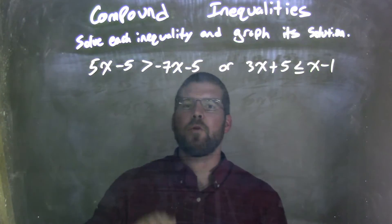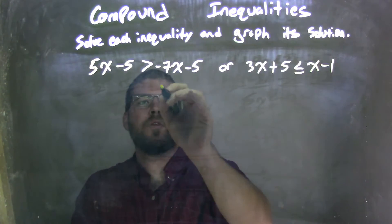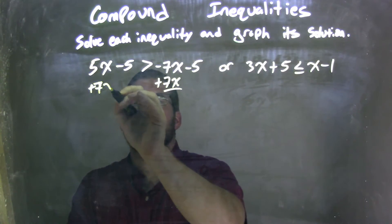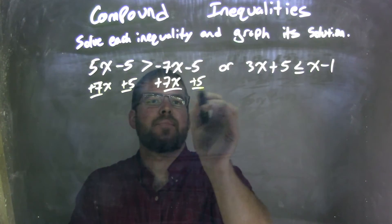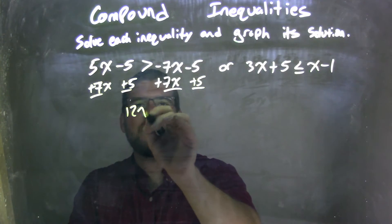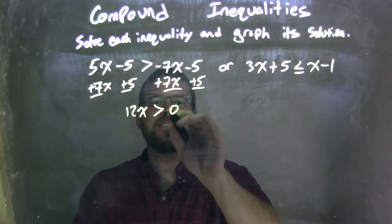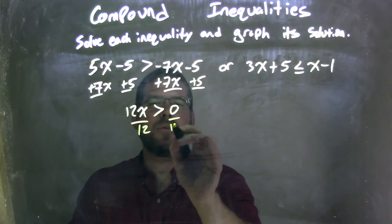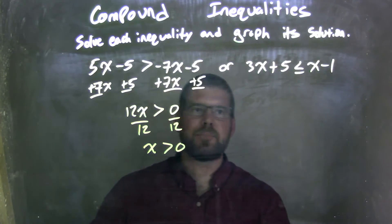My first goal is to solve each one individually, so I'm going to solve this one first. I'm going to add a 7x to both sides, and add a 5 to both sides as well. 5x plus 7x is 12x, and it's greater than negative 5 plus 5 which is 0. If I divide by 12 on both sides, 0 divided by 12 is 0, and we're left with just x on the left.